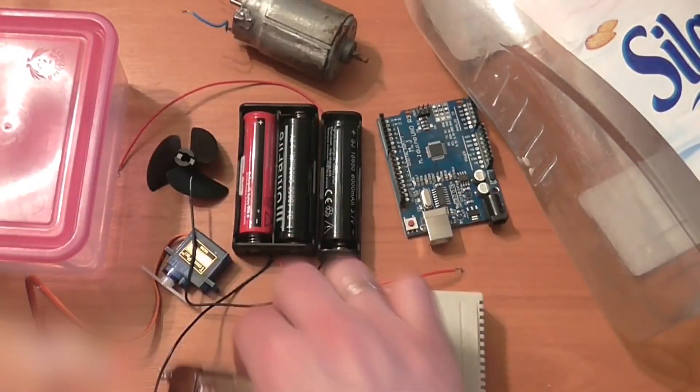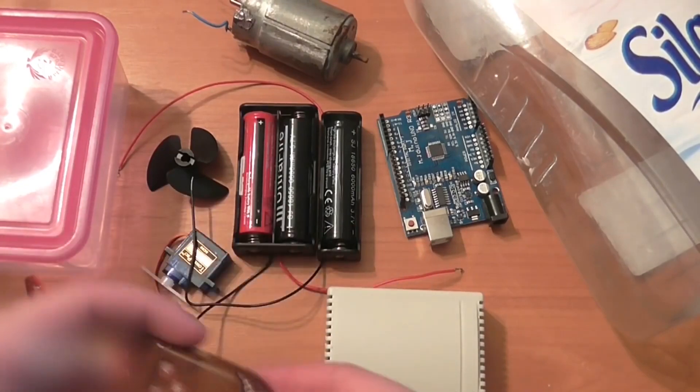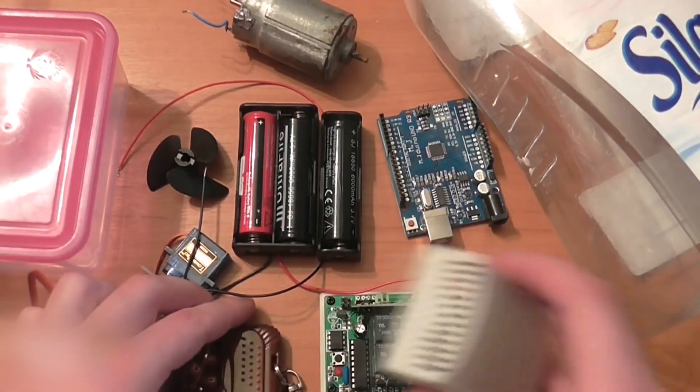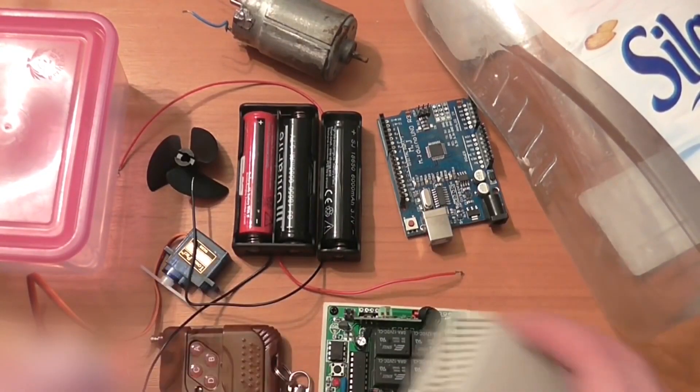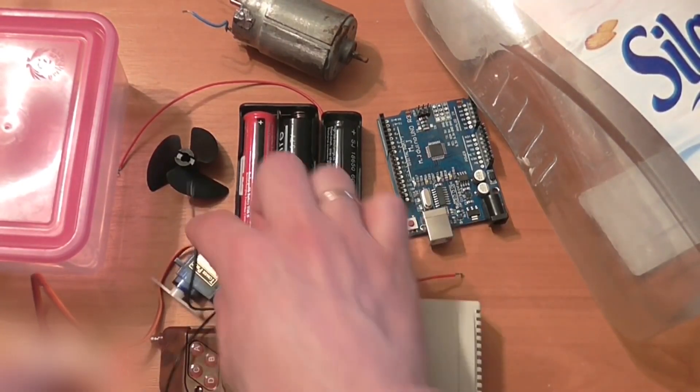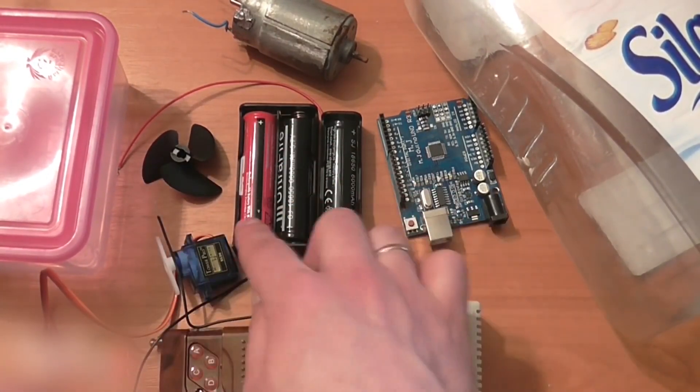We also need a transmitter with four channels and a receiver with four relays and four channels, an SG90 servo, three 18650 batteries with cases, a motor, a plastic bottle for the boat's case, and a propeller.